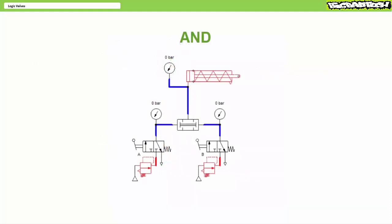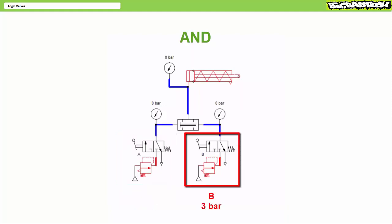A simple test circuit can be used to demonstrate the function of these two logic valves. Let's take a look at the AND or dual pressure valve first. The regulator on the left is set to 2 bar, or roughly 29 PSI. The valve on the left blocks or passes the signal to input A. The regulator on the right is set to 3 bar, roughly 43.5 PSI. The valve on the right blocks or passes the signal to input B.